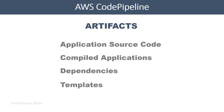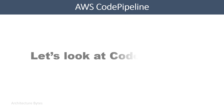Artifacts are a collection of data. Application source code, compiled applications, dependencies, or templates are all examples of artifacts. Now that we understand these important terms, let's look at the Code Pipeline.